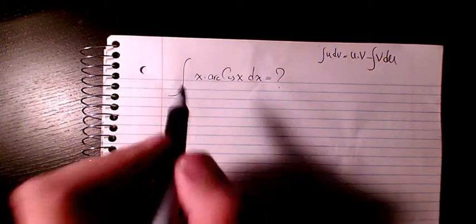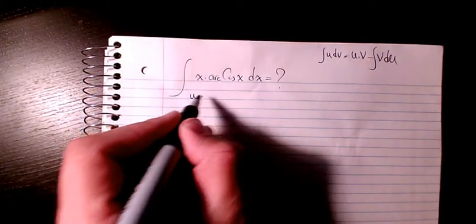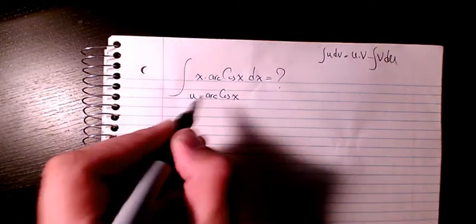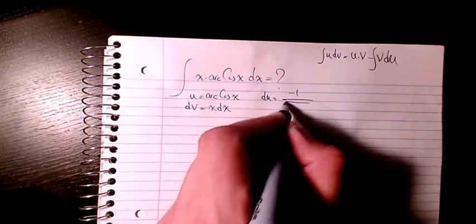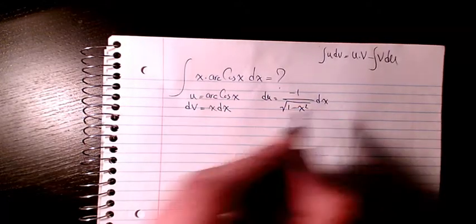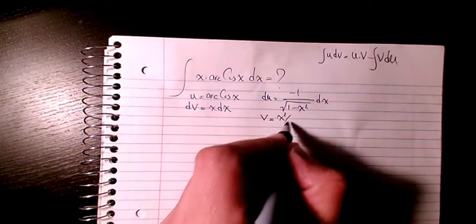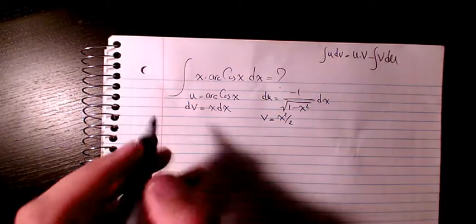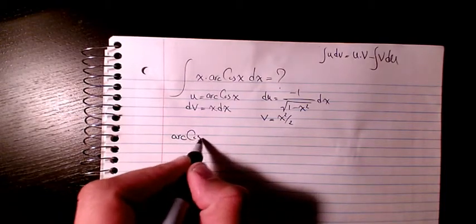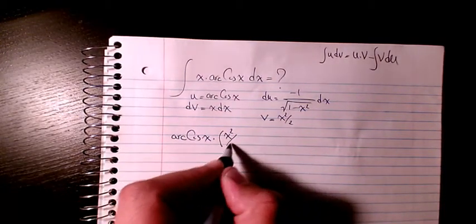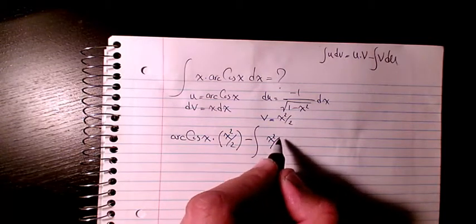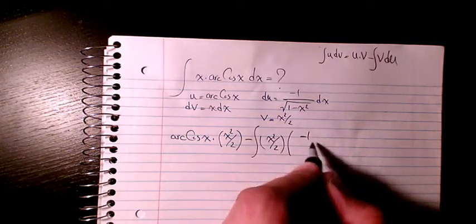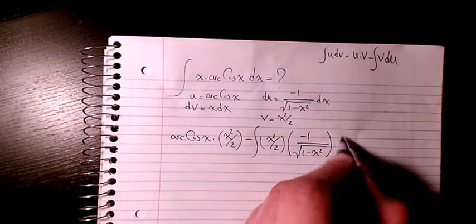I consider u as arccos(x) and dv as x dx. So du will be negative 1 over the square root of (1 minus x squared) dx, and v will be x squared divided by 2. So u times v will be arccos(x) times x squared divided by 2, minus the integration of v — which is x squared divided by 2 — times negative 1 over the square root of (1 minus x squared) dx.